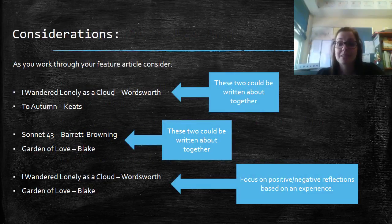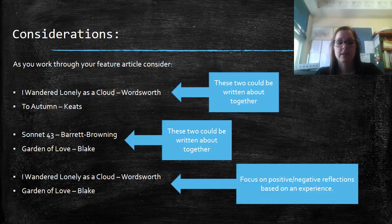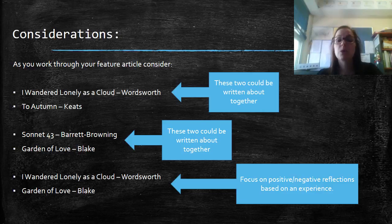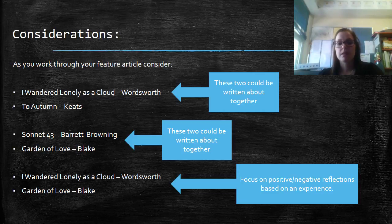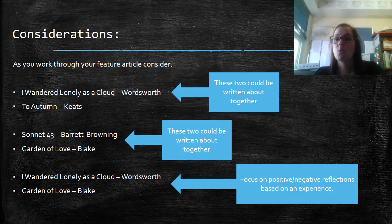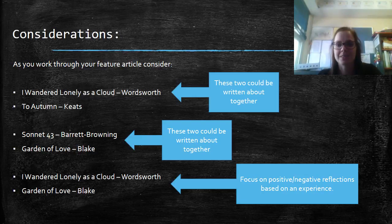What we've got here are some considerations for your assessment. You might like to look at these pairs of poems together. You might choose I Wondered Lonely as a Cloud by William Wordsworth or To Autumn by John Keats. Or you could look at Sonnet 43 by Barrett Browning and The Garden of Love by Blake. A third option could be I Wondered Lonely as a Cloud with The Garden of Love. We're going to talk you through on the next couple of slides where you might like to go with each of these texts and some considerations that should assist you in choosing a particular angle or strategy to tackle this task.